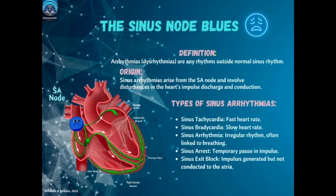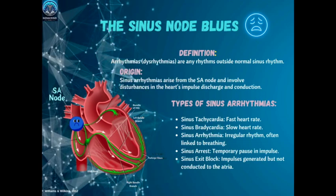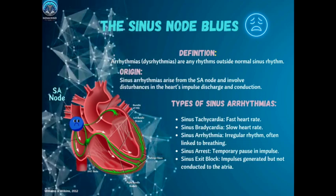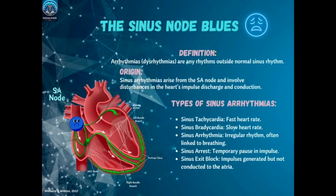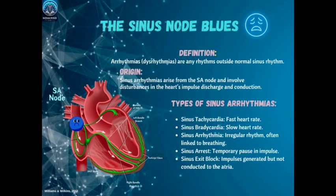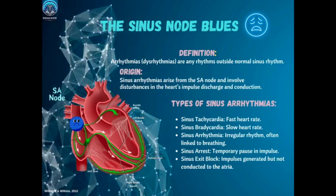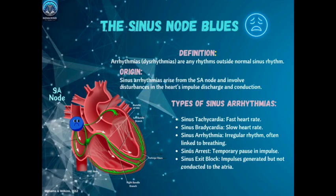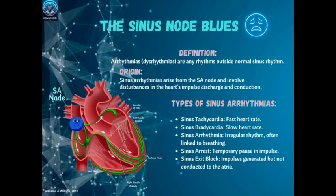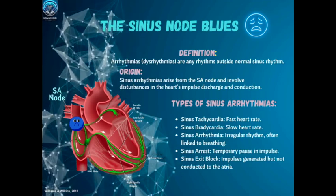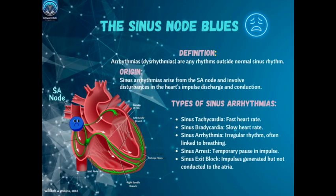An arrhythmia, also known as a dysrhythmia, refers to any deviation from the normal sinus rhythm. Sinus arrhythmias specifically originate in the sinoatrial or SA node and result from abnormalities in how the SA node discharges electrical impulses or how those impulses are conducted through the heart. Common types covered in this episode include sinus arrhythmia, sinus tachycardia, sinus bradycardia, sinus rest, and sinus exit block.